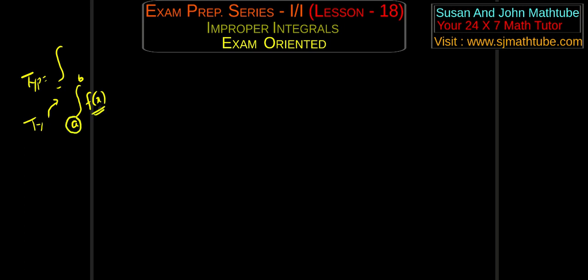That means, if you plug in A or if you plug in B in the function, then the function value will shoot to infinity. And the method was very simple — we find the troublemaker. Troublemaker means the point which makes the function infinity, and such points are called singular points. So we find the singular points and erase them.